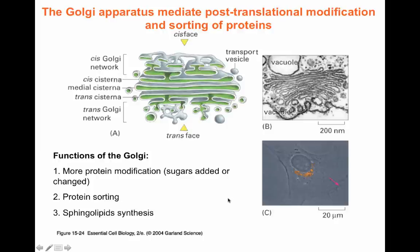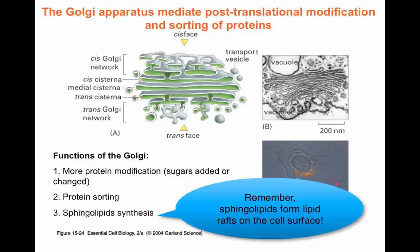The main functions of the Golgi are to modify proteins. The Golgi will be the main site for adding glycosylation modifications — initial glycosylation happens in the ER, but the elaboration of glycosylation happens in the Golgi apparatus. We also have protein sorting, where proteins targeted to different organelles will be assembled into different vesicles at the Golgi network. Lastly, the Golgi is involved in the generation of sphingolipids, which will be assembled into vesicles and transported to the plasma membrane.